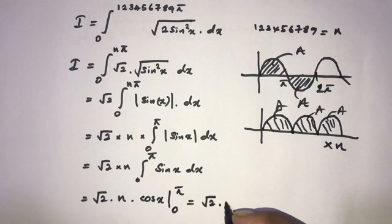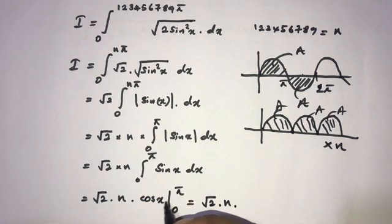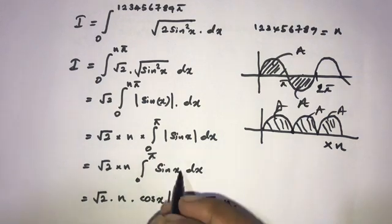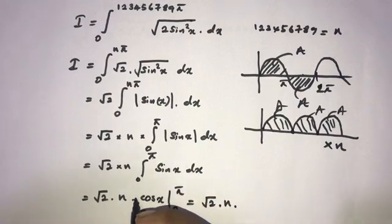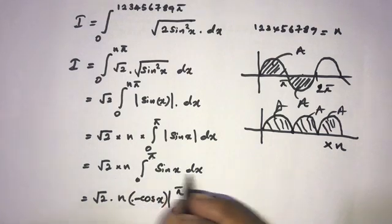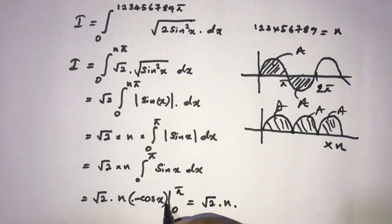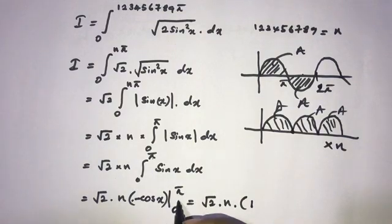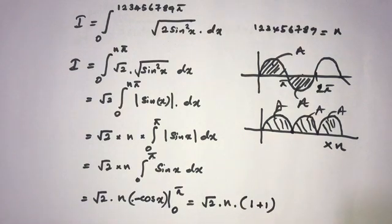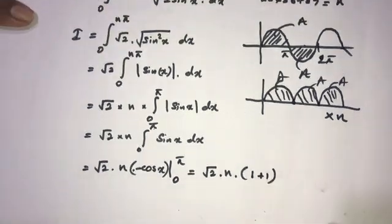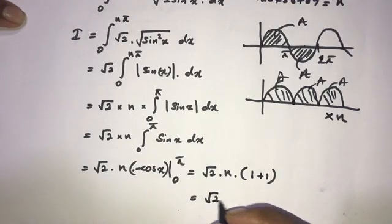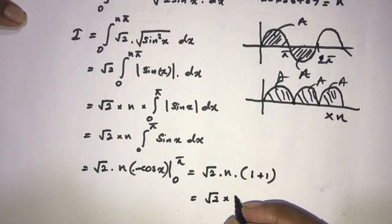Now, if we plug in 5, we get negative cosine of 5. Actually, the integral of sine of x is equal to negative cosine of x — sorry for that. So we have negative cosine of 5 minus 1, so minus times minus 1 plus 1, and minus times minus cosine of 0. So that gives us 1 plus 1.